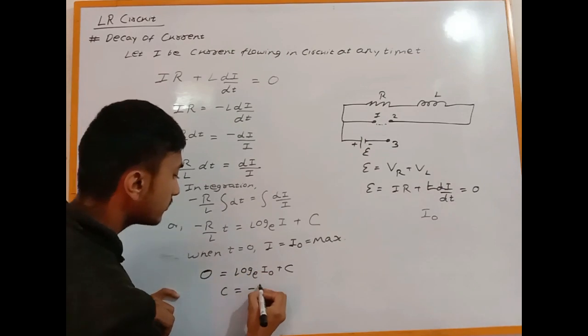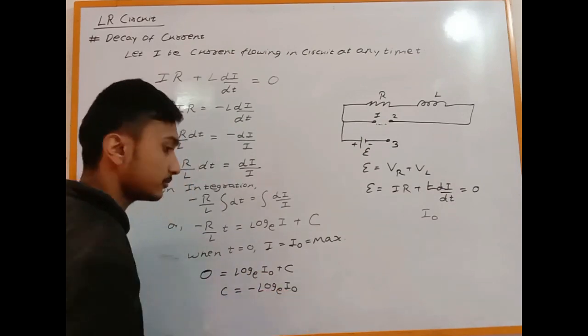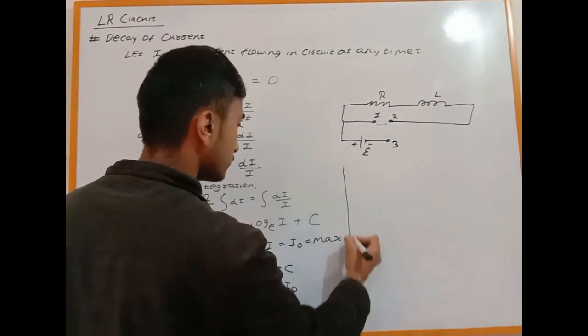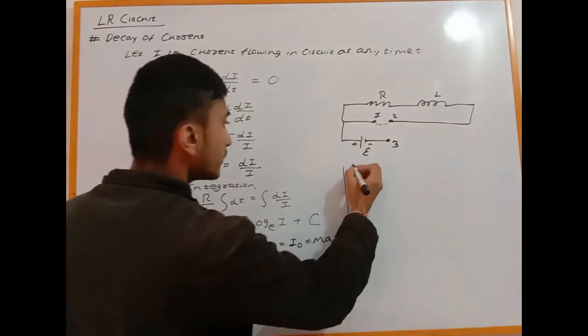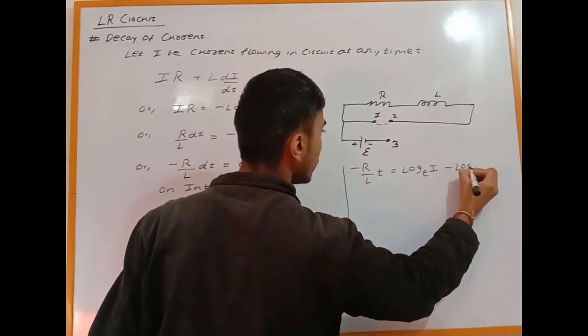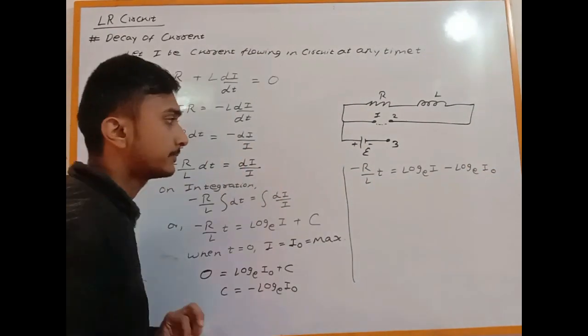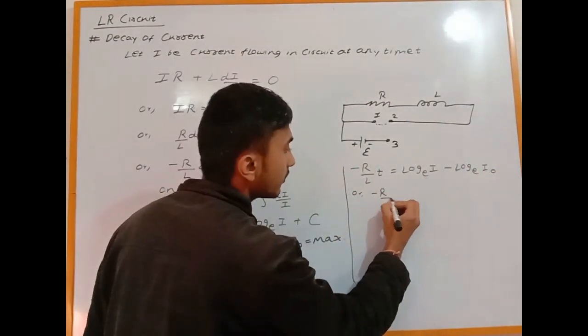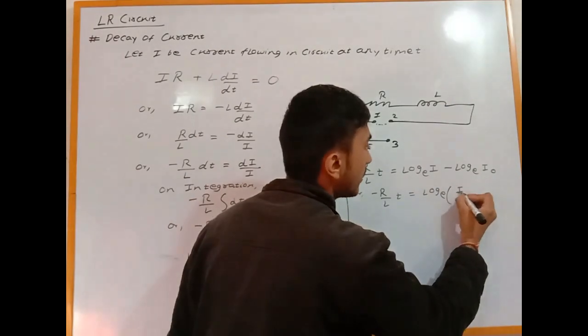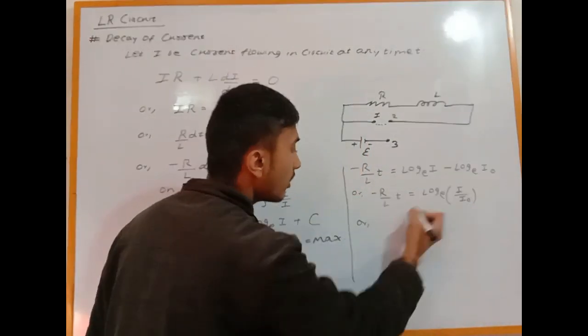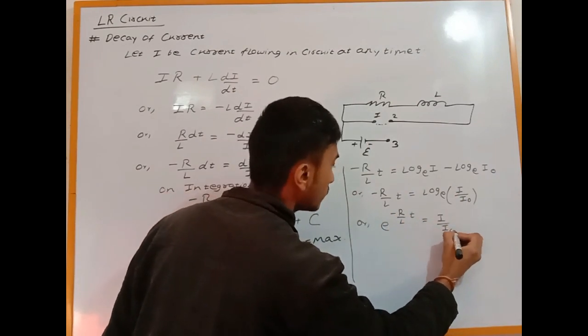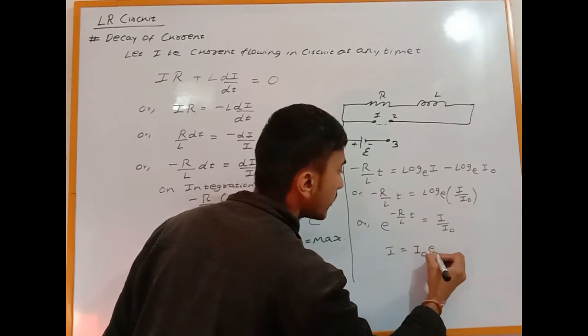Therefore C equals -ln(I₀). Substituting back: -(R/L)t = ln(I₀) - ln(I). Using the log formula ln(a) - ln(b) = ln(a/b), we get: -(R/L)t = ln(I₀/I). Taking exponential of both sides: I₀/I = e^(Rt/L). Therefore I = I₀·e^(-Rt/L).